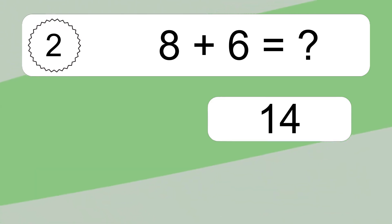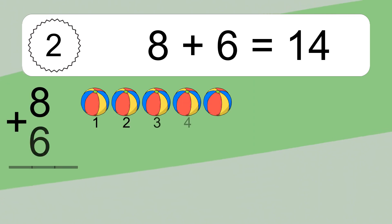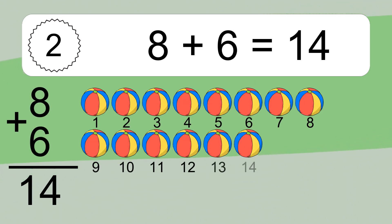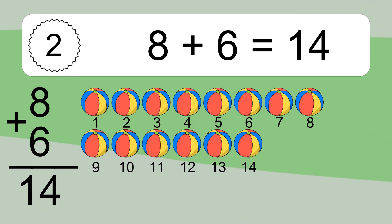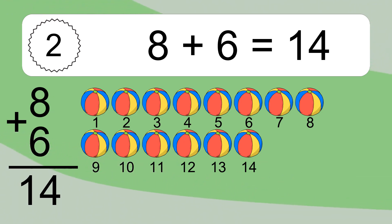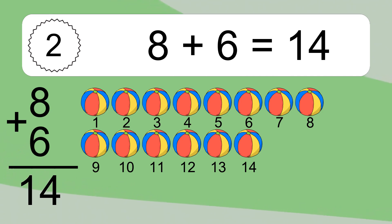8 plus 6 equals what? 8 plus 6 equals 14. Let's count it: 1, 2, 3, 4, 5, 6, 7, 8, 9, 10, 11, 12, 13, 14.